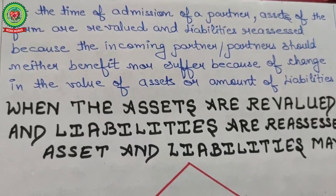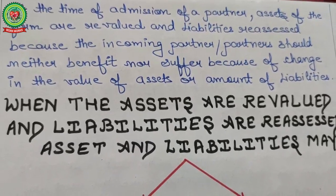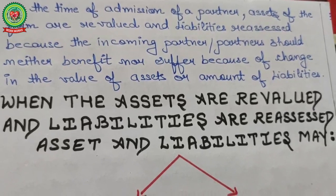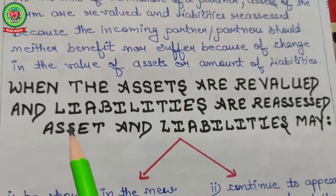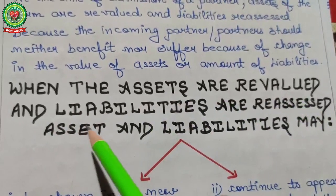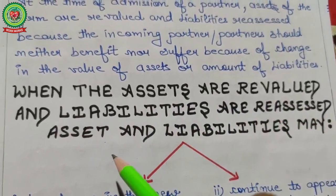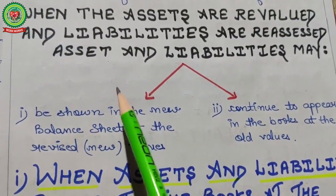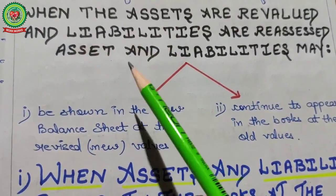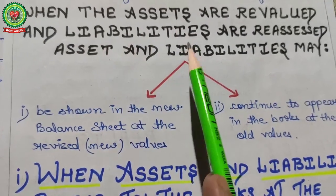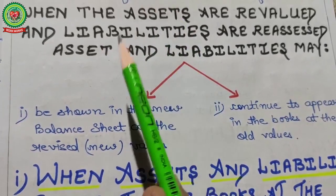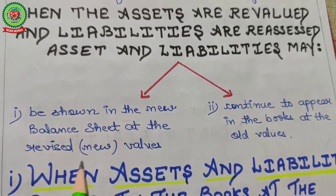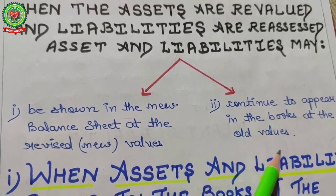At the time of admission of a partner, assets of the firm are revalued and liabilities are reassessed because the incoming partner should neither benefit nor suffer because of any change in the value of assets or amount of liabilities. When assets are revalued and liabilities are reassessed, there are two methods depending on whether the revised values are to be recorded in the books or not.